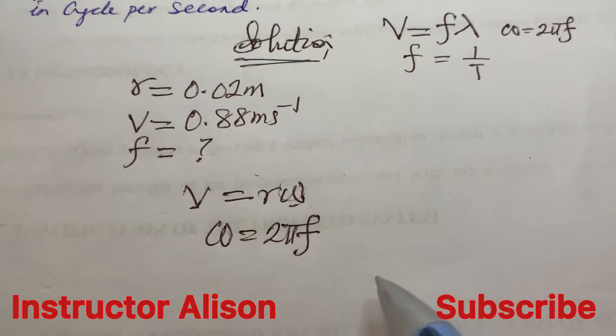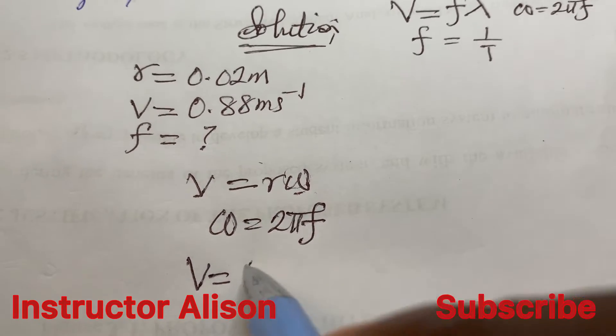But then we don't have this angular velocity. We know that angular velocity, or angular frequency, is 2πf. So if you substitute that in this expression, you should be having that V is equal to - in place of this omega we can replace it with 2πf multiplied by r, which is 2πfr.